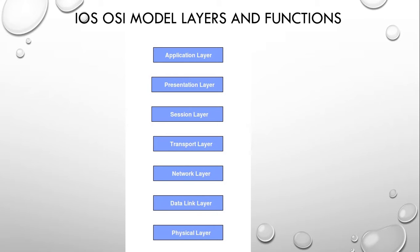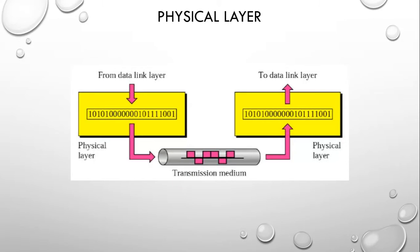The physical layer converts digital data so that it can be sent through a physical medium. It simply moves data between hosts. Examples include Bluetooth, Wi-Fi, and others.